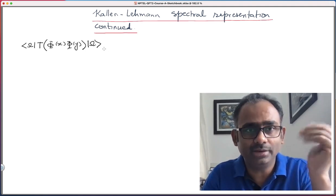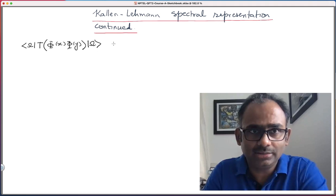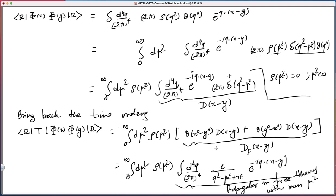Where phi could be elementary field, the field that appears in your Lagrangian, or phi could be a composite field. We showed that this can be written as this spectral density integrated over spectral density times free propagators, but this time the mass that appears in the free propagator is mu square, and mu square is not a mass in the physical theory. It is something which you integrate over. So mu square takes all possible values from 0 to infinity.